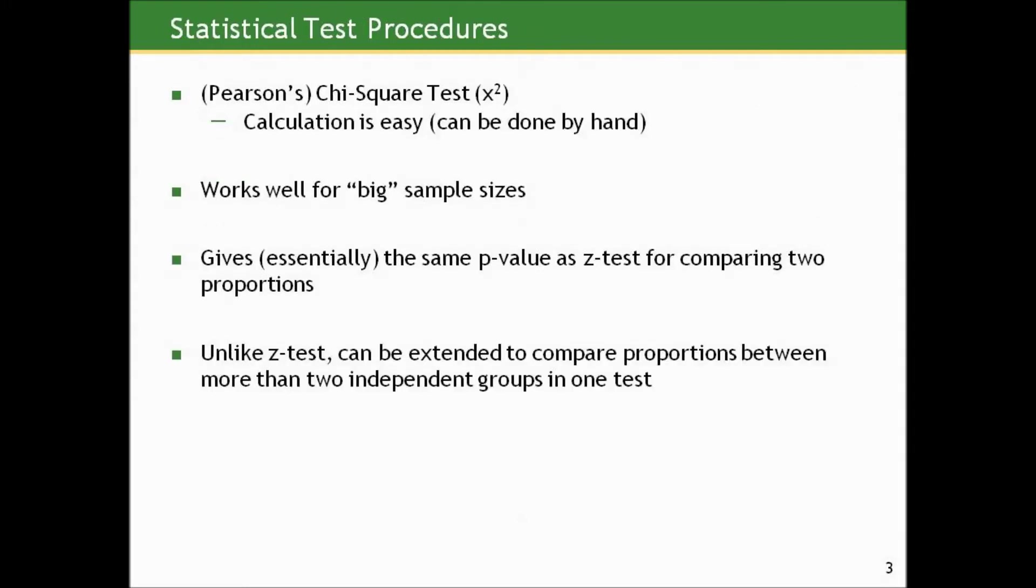What we alluded to before is more formally called Pearson's chi-square test, named after the statistician Carl Pearson. Calculation is relatively easy. It can also be done by hand, like the two-sample z-test, although it's a little more involved. And just like the two-sample z-test, it works well for big sample sizes. And remember, we talked loosely in lecture three about what constitutes a big sample versus smaller sample for binary data. We're not going to make you make that distinction. We'll talk about small sample inferences later on, but we're not going to require you to make the distinction of whether you have a big sample or not. And this gives essentially the same p-value as that z-test for comparing two proportions.